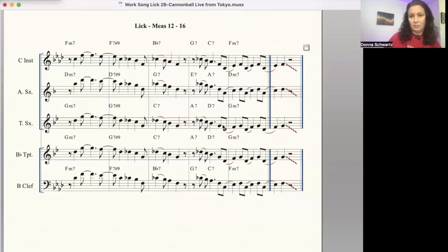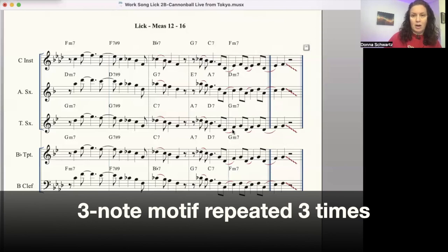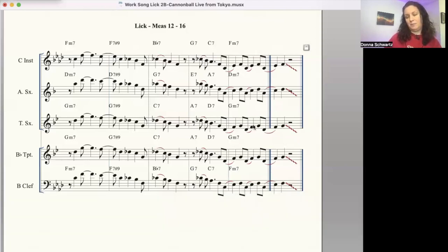And so this lick over here, it's a nice little motif that's repeated three times, and so it's being anticipated. So that's how we could explain that, and over here, all these tones are chord tones in the G minor 7 chord.